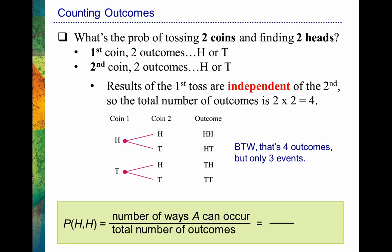There's one divided by four, which of course equals 0.25. So when you flip two coins, you will find heads followed by heads about 25% of the time.